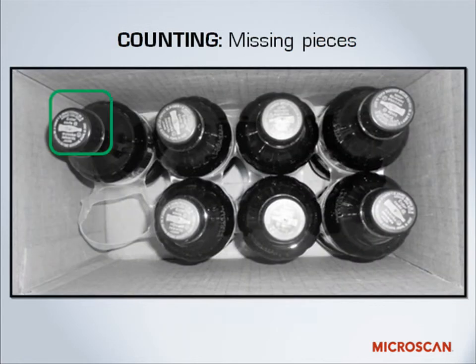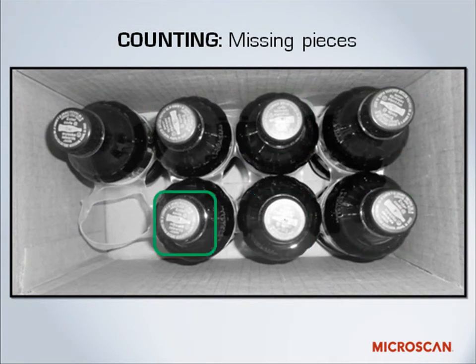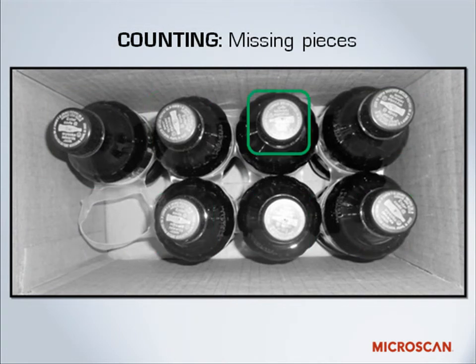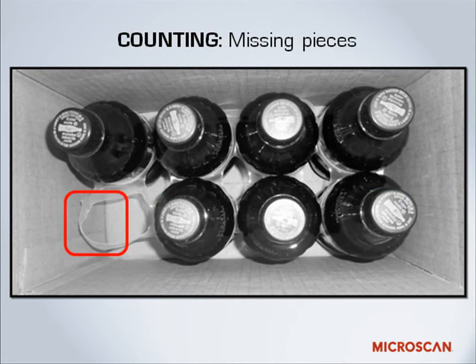Another counting function is absence/presence — is it there or not? Here we have an eight-pack of sodas, and you can see that one of the sodas is missing. With machine vision, that packaging can be checked to make sure an incomplete pack doesn't make it to the grocery store shelf. We've slowed the process down so you can see it, but machine vision systems can operate much faster.